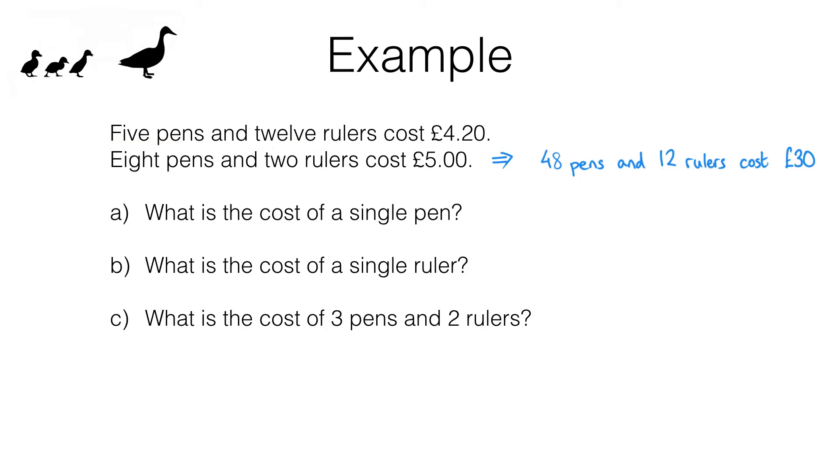So if we compare this to the first line let's see what happens. I'm just going to write the first line down here so it's easy to compare in line. Let's look at these two lines of information then. In this line we're paying 30 pounds whereas in this line we're paying 4 pounds 20. So in the first line we're paying 25 pounds 80 more.